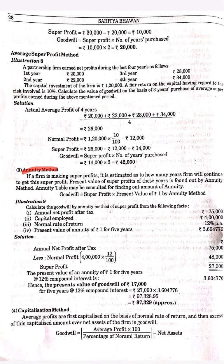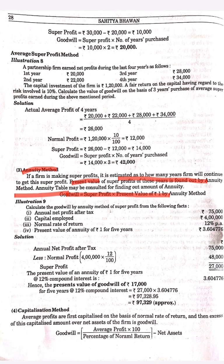Moving further, today we will discuss the annuity method. It's simple — if a firm is making super profit, it is estimated as to how many years the firm will continue to get this super profit. The present value of the super profit of these years is found out by the annuity method, and an annuity table may be consulted for finding out the amount of annuity.